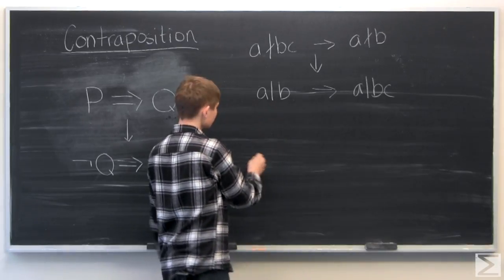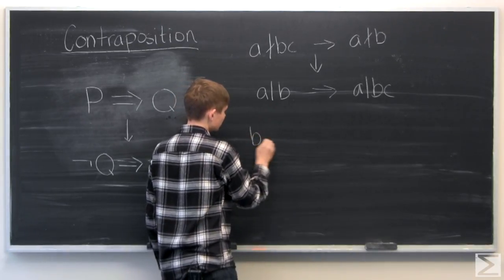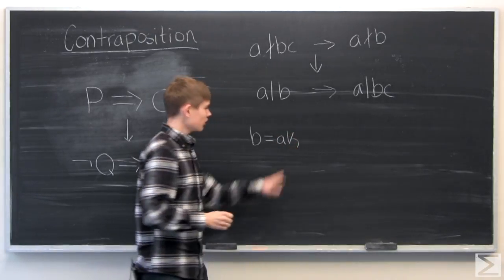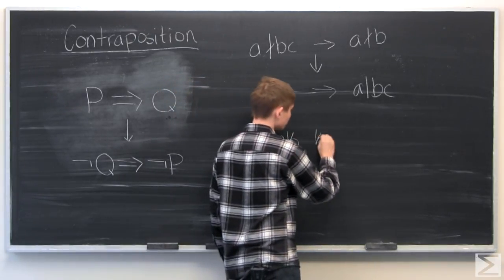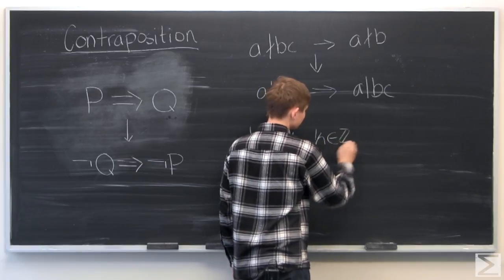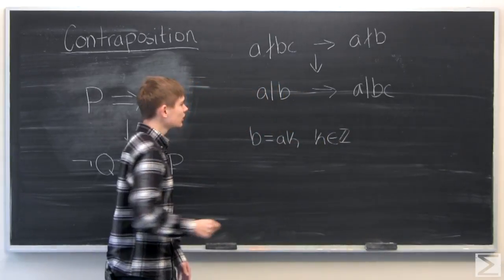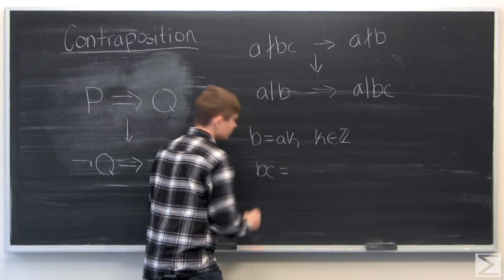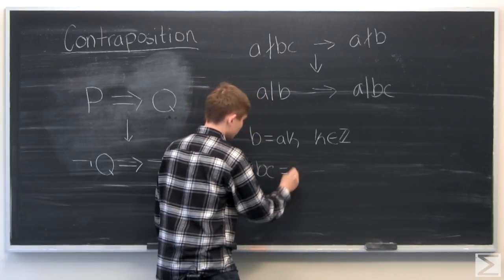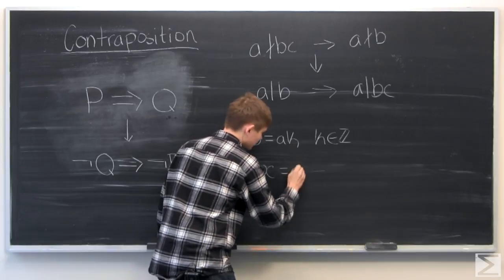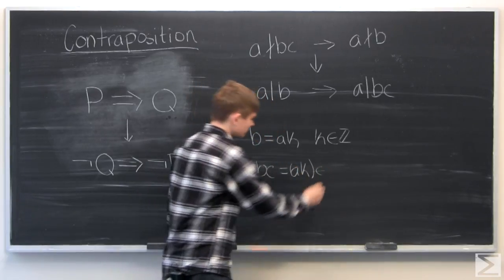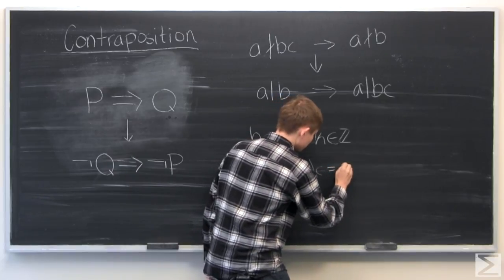So if a divides b, that means that b is some multiple of a, where k is just an integer. And this means that b times c is equal to b, which is a times k, times c.